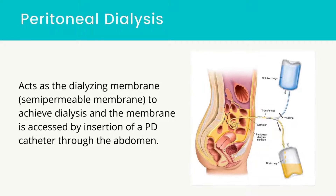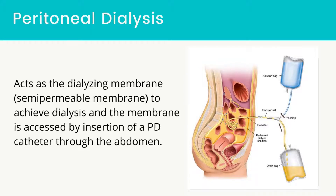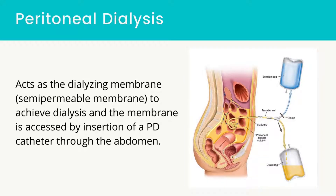Peritoneal dialysis — how does peritoneal dialysis work compared to hemodialysis? The peritoneum acts as the dialyzing membrane, a semi-permeable membrane, to achieve dialysis, and the membrane is accessed by insertion of a PD catheter through the abdomen. PD occurs via the transfer of fluid and solute from the bloodstream through the peritoneum into the dialysate solution. In order for PD to be efficient, it still uses the process of osmosis, diffusion, and ultrafiltration.